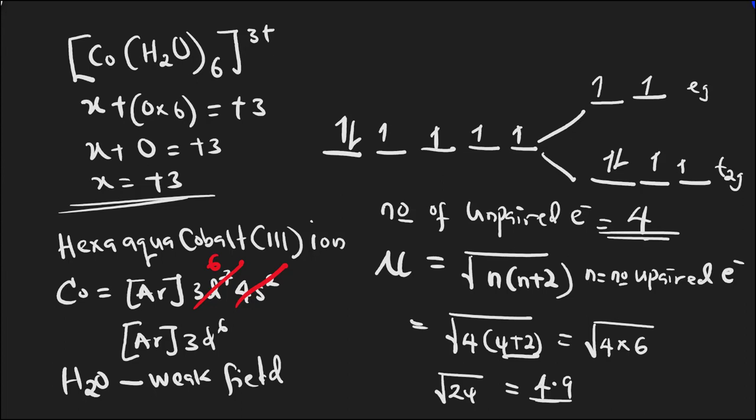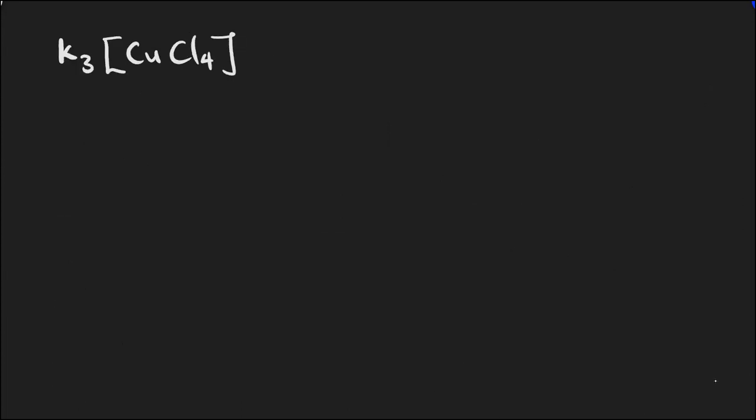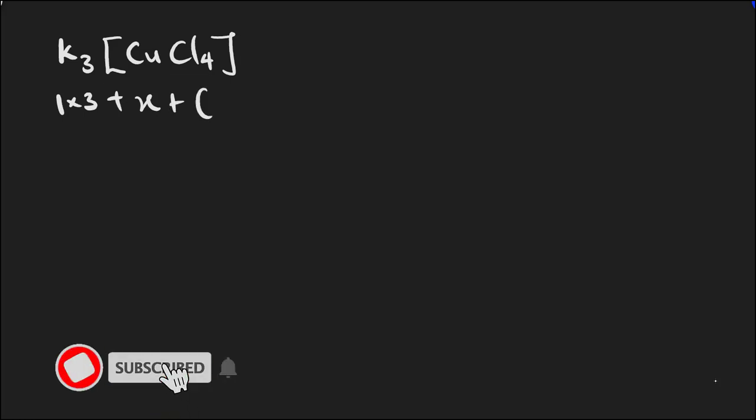Even though the question did not ask for the type of magnetism, this complex will be paramagnetic due to the presence of unpaired electrons. Now let's look at the second complex. We need to give the IUPAC name, oxidation state, number of unpaired electrons, and spin-only magnetic moment. As usual, the first thing is to calculate the oxidation state. Potassium is +1, so three potassiums give +3. The central metal is x. Chlorine is −1 times four = −4.